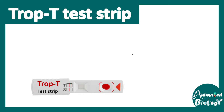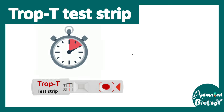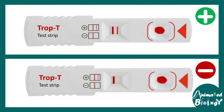From the TROP-T test strip we can determine whether the test is negative or positive. We have to wait about 30 minutes for the reaction to occur. If two lines appear on the test strip, the test is positive; if only one line appears, the test is negative.